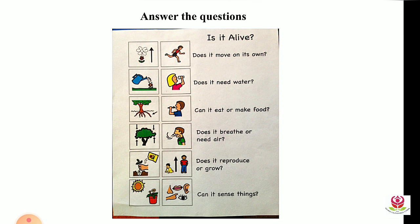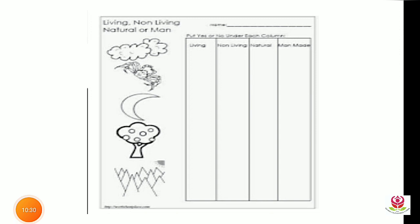Now let's look at this task. Does it move on its own? Does it need water? Can it eat or make food? Does it breathe or need air? Does it reproduce or grow? Can it sense things? For human beings — yes to all: we can move, we need water, we need food, we breathe air, we reproduce and grow, and we have senses.